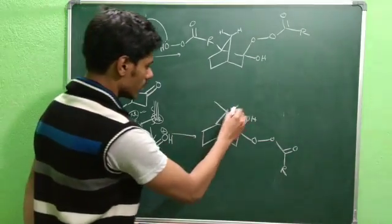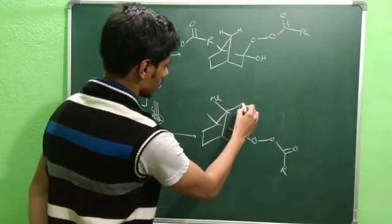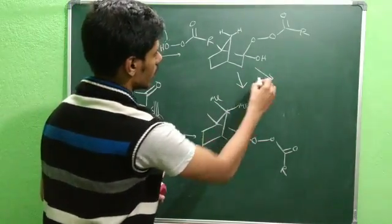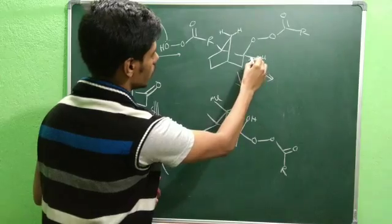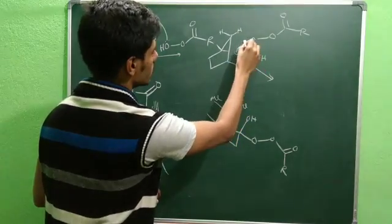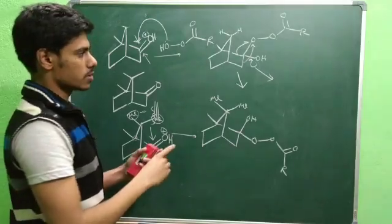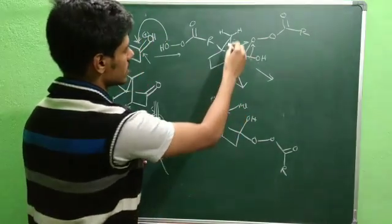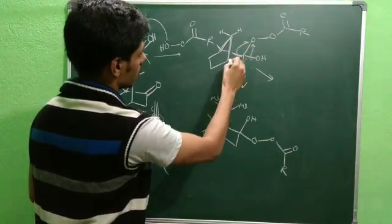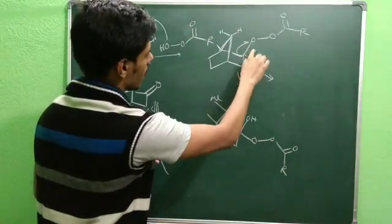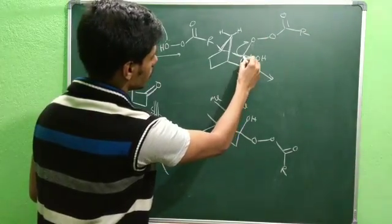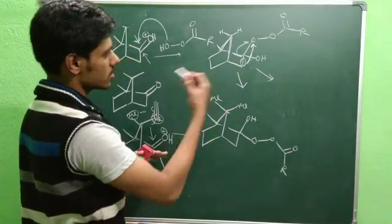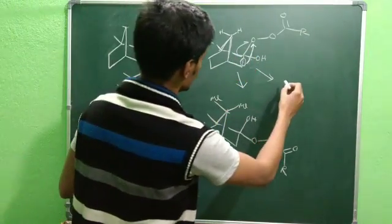Now consider the two migration possibilities from the exo adduct. The lone pair will push and either the tertiary bridgehead group or the methylene group can migrate. If you look at this, there is a chair-like arrangement. The oxygen is upward. If the methylene group migrates, you can track what product you will get.